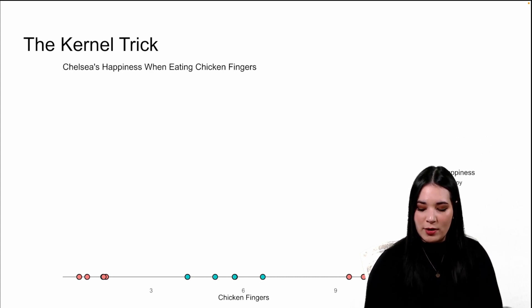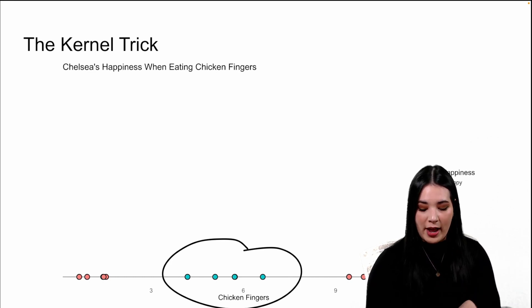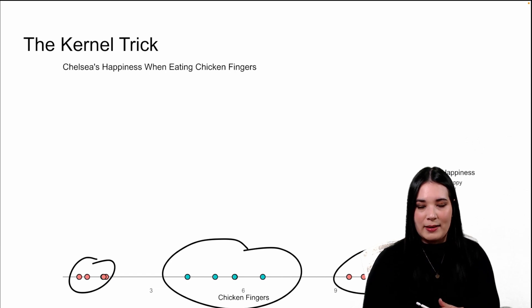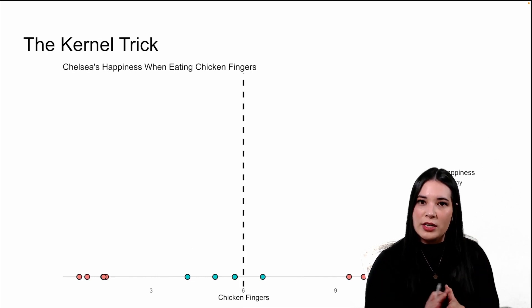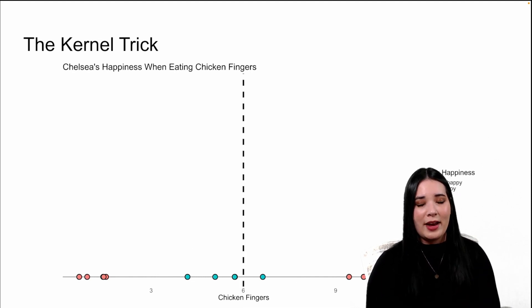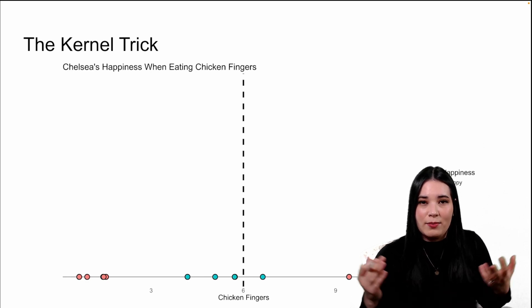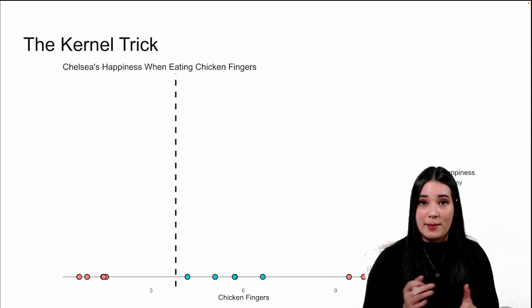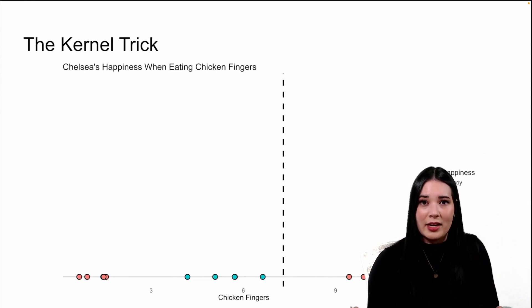You can see from this graph that I'm relatively happy when I eat about three to six chicken fingers, but I'm very unhappy when I eat less than three or more than nine, probably because I'm either very hungry or overly full respectively. Now, if I wanted to use a straight line to distinguish between the times when I am happy versus unhappy with the amount of chicken fingers I have, I can't really do it. No matter where I place my line, I just can't use a single straight line in order to divide my unhappy versus my happy cases.